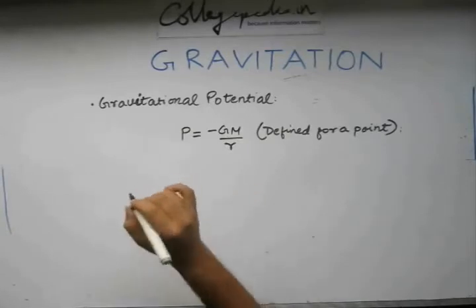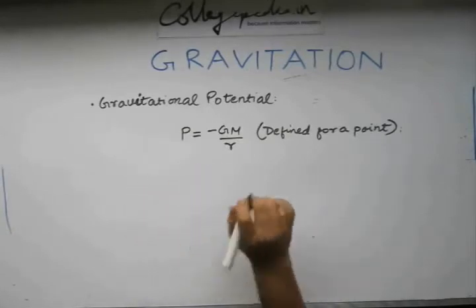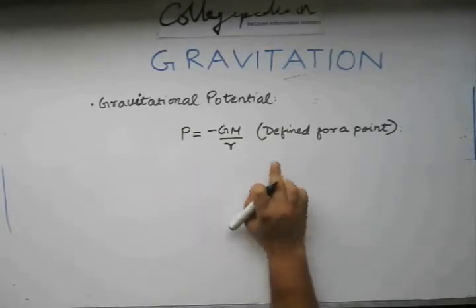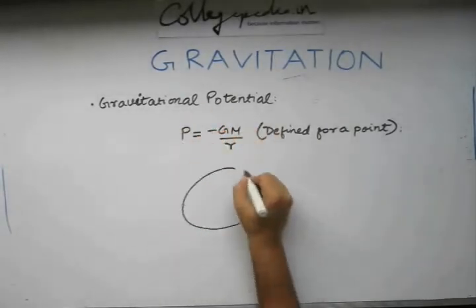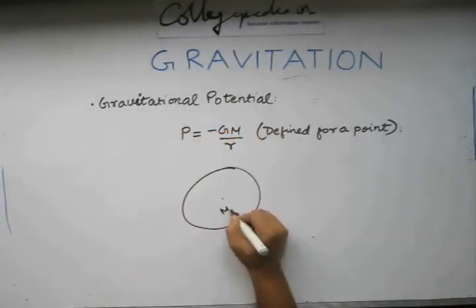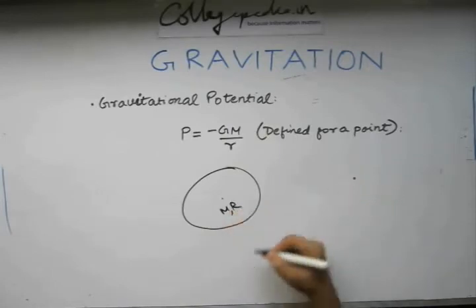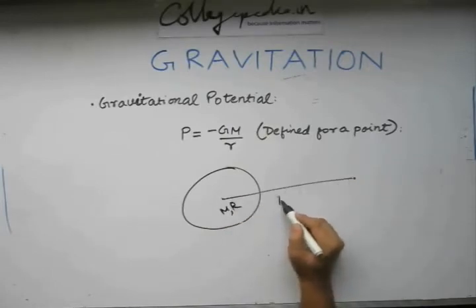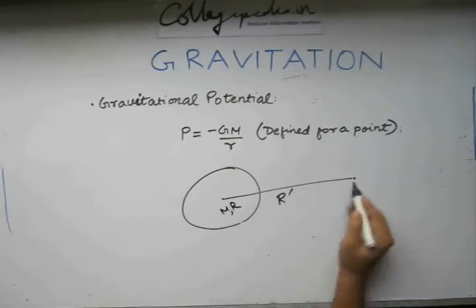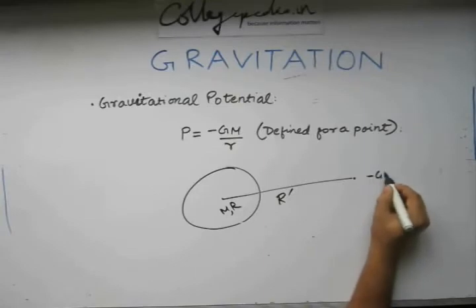So every point in a gravitational field will have some potential, which is defined by this formula. If we have a planet with mass M and radius r, and we are looking at a point located at distance capital R dash, then the gravitational potential at this point is going to be minus GM by capital R dash.